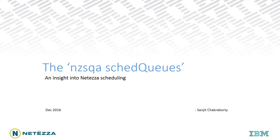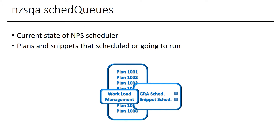Hello everyone and welcome. I am Sanjee from IBM. This is a short video on the nzsqa schedQueues command output, which is commonly used with performance troubleshooting. You have heard about the Workload Management or WLM feature in NPS. The workload of NPS consists of user-initiated jobs such as SQL queries, administration tasks, data loads, and system-initiated jobs such as vacuums, etc. WLM controls and monitors these concurrent queries via a set of schedulers.